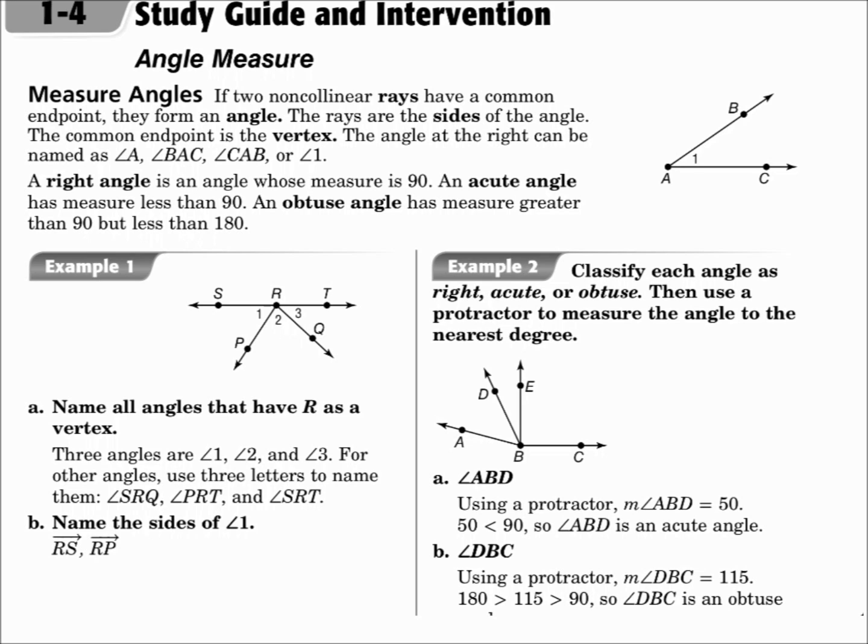If two non-collinear rays have a common endpoint, they form an angle, just like angle A. The rays are the sides of the angle, and the common endpoint is the vertex.